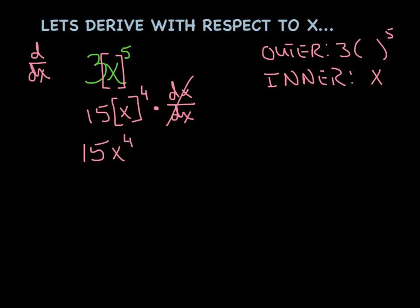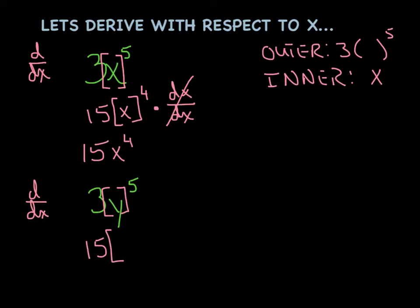Now what if I threw something like 3y to the 5th at you, and I still wanted to do the derivative with respect to x? Again, wrap up that y — that's your inner function. So let's go: 5 times 3 is 15, don't touch the inner, raise it to the 4th. Now take the derivative of what was inside with respect to x, and that's where dy/dx was born.